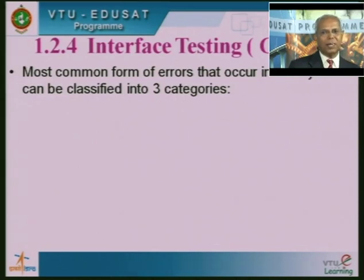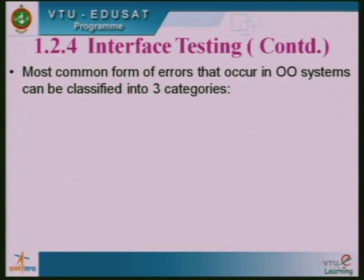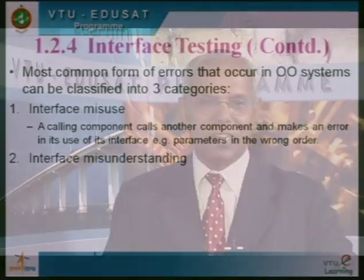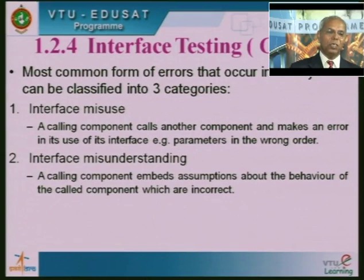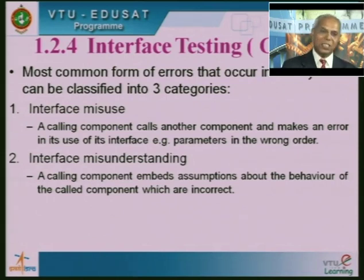The most common interface errors in object-oriented systems are classified into three categories. First, interface misuse — wrong parameters are passed, the interface misbehaves, causing problems within the system; we generate test cases for possible misuse and ensure the system cannot be misused. Second, interface misunderstanding — a calling component embeds incorrect assumptions about the behavior of the called component; we give wrong parameters and make sure the component rejects them with an appropriate message like 'this is not an acceptable value, please give a value within this range.' Third, timing errors — components operating at different speeds cause synchronization problems that may result in data loss.